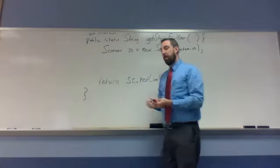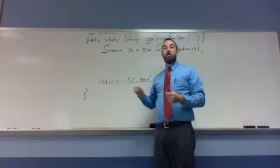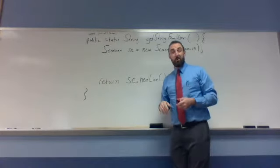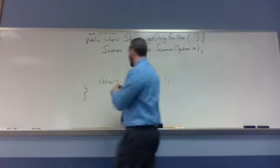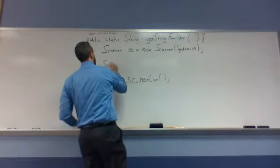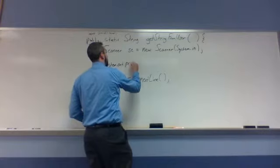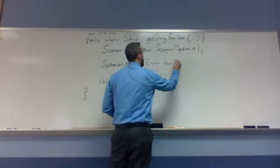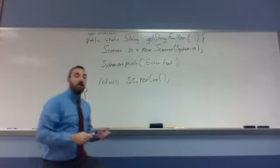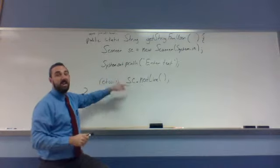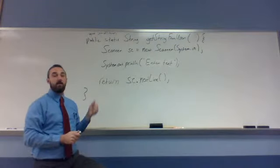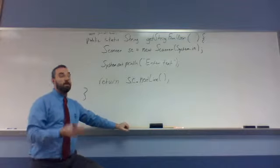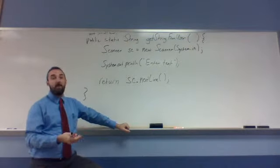Once you do that, the red lines should go away. Now you don't have any errors, but we do have a problem. When you call this method, it's going to pause the program and wait for the next line to be typed in. If the person at the keyboard doesn't know they're supposed to type, they won't type anything. So let's refine this a little bit - right in the middle here, we put a print statement: System.out.println("Enter text"). Now every time we get a string from the user, it prints "Enter text", waits for them to type, and returns what they typed.